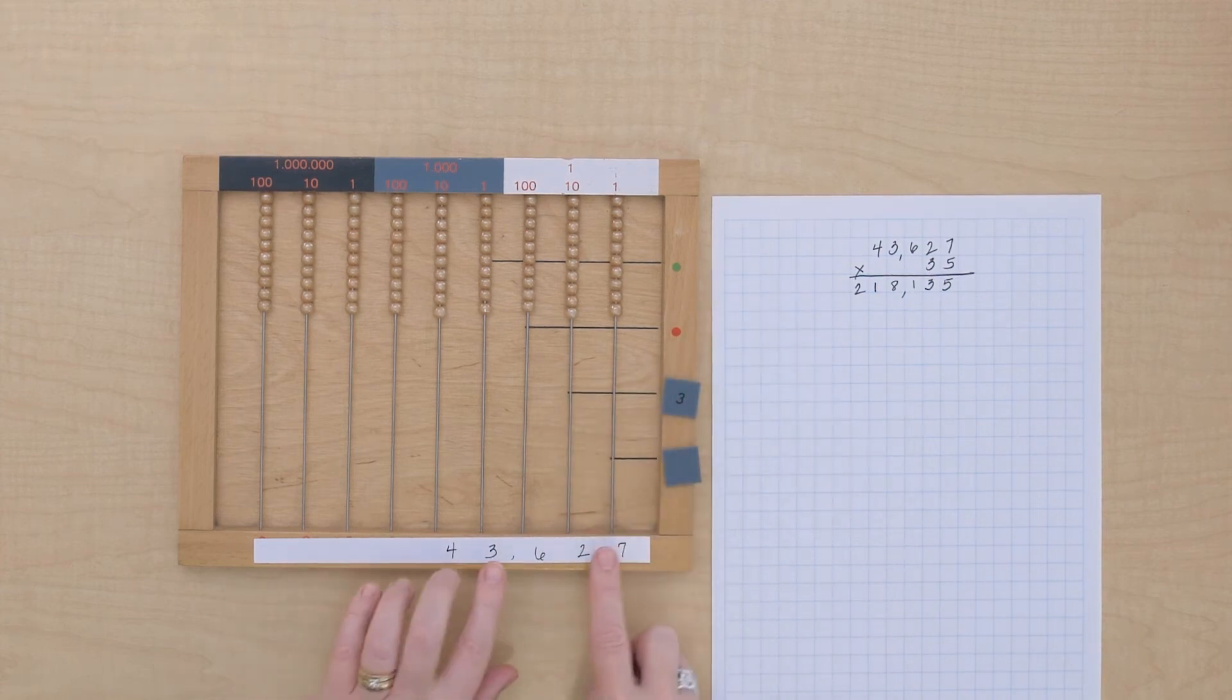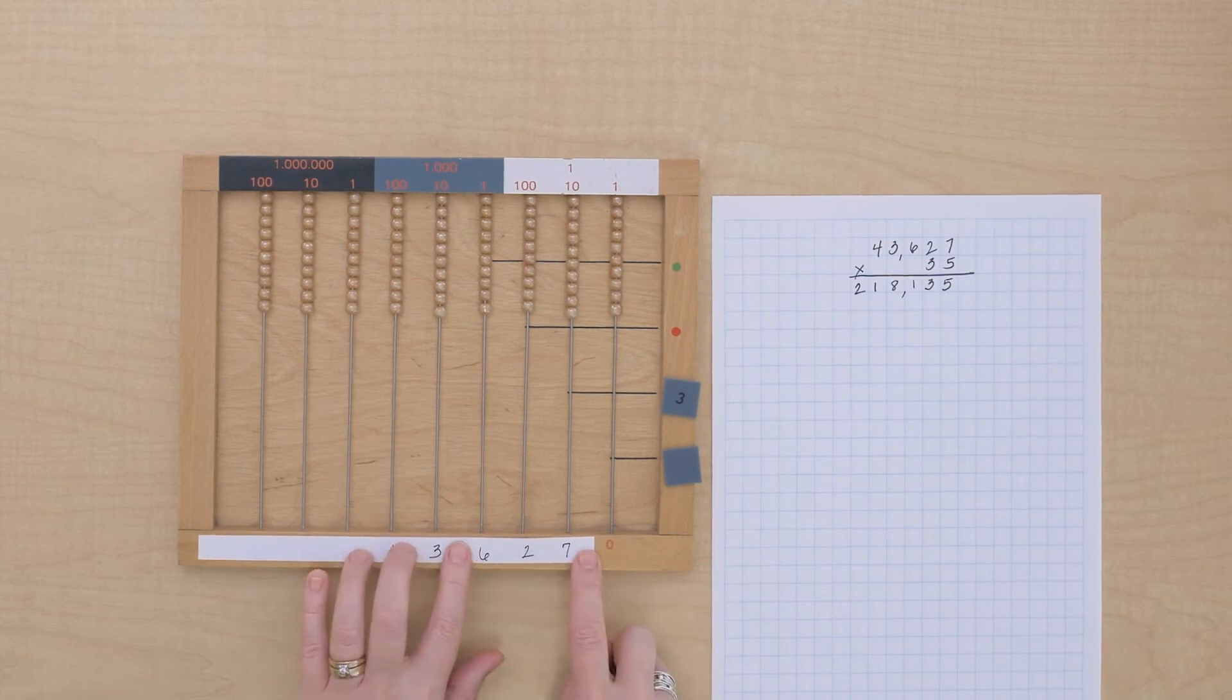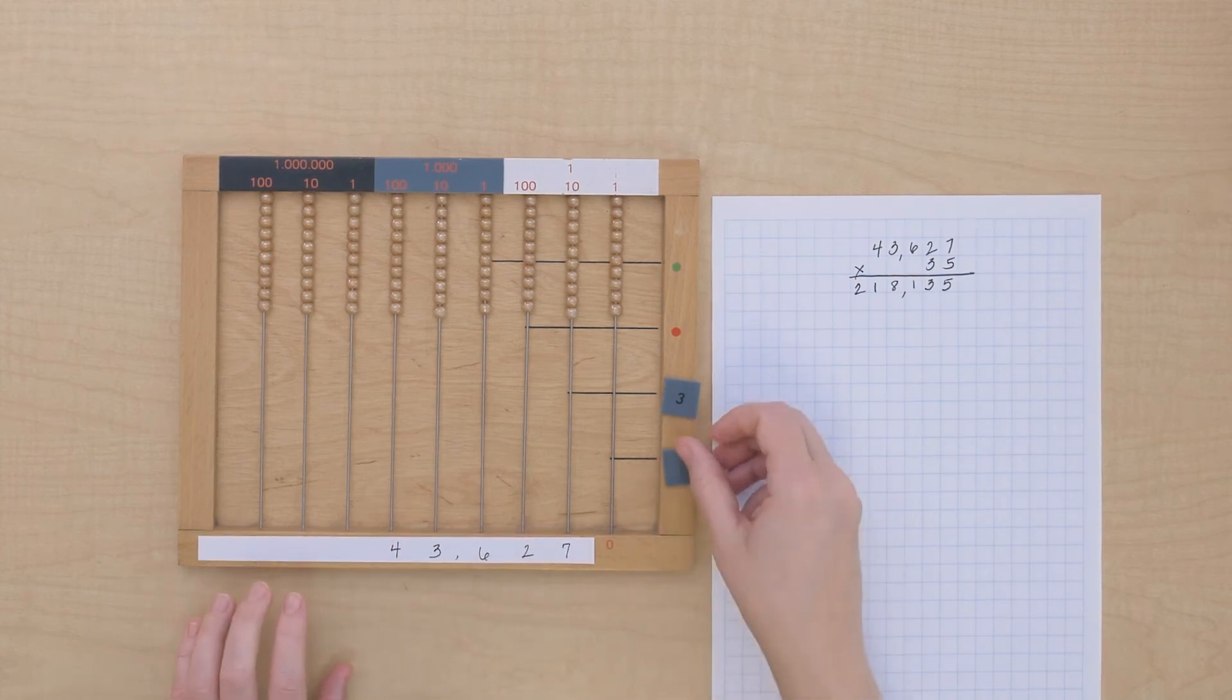All right, it's telling us to start here, so we need to slide. It's like we're multiplying by 10 here. And now, we can multiply by the 3.